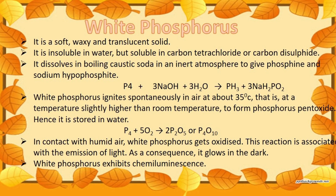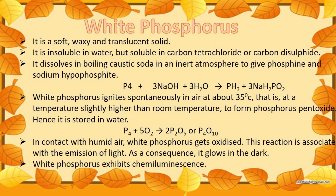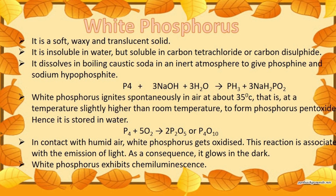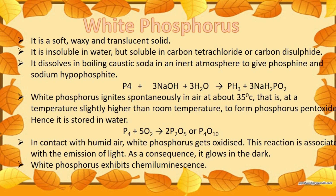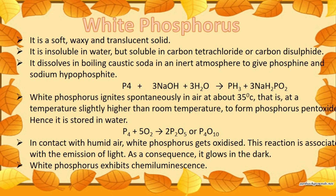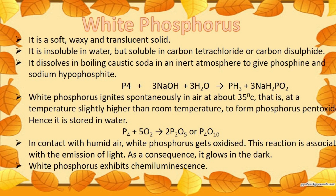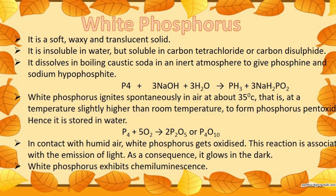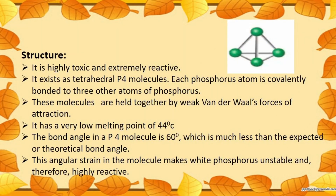White phosphorus ignites spontaneously in air at about 35 degrees Celsius, which is slightly higher than room temperature, to form phosphorus pentoxide. Hence it is stored in water. In contact with humid air, white phosphorus gets oxidized; this reaction is associated with the emission of light, causing it to glow in the dark. Therefore, white phosphorus exhibits chemiluminescence — the production of light from a chemical reaction.